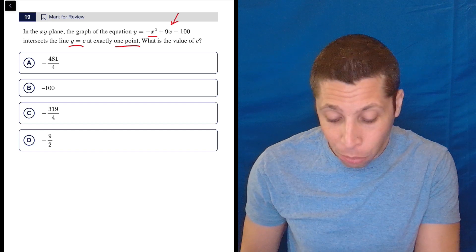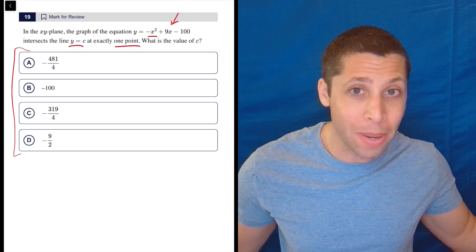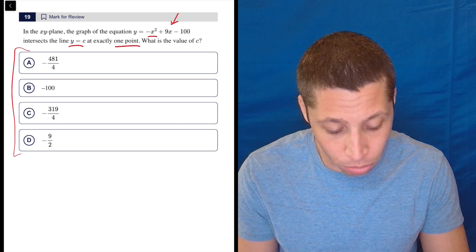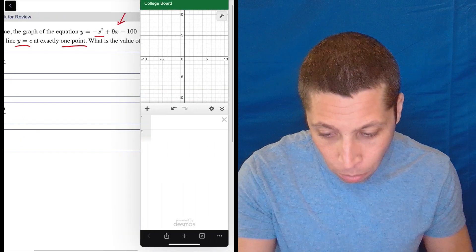Honestly though, I've got four answer choices. It's not like c could be anything. So I'm just going to Desmos this thing and guess and check, and that's that. So let's do it.